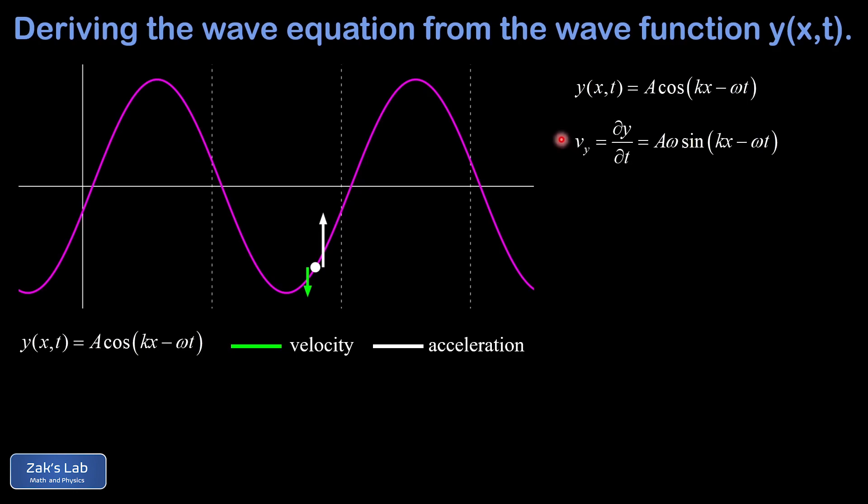Sometimes we might be interested in writing down the maximum speed for a point on the string, and that is given by the coefficient of the sine function. So we can say that v max equals a omega.